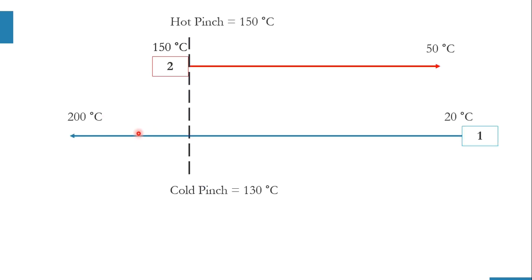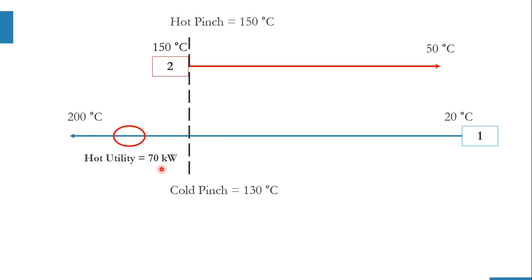Now we check the rules. Above pinch: number of hot streams is 0, number of cold streams is 1 — rule satisfied. CP of hot: no hot stream, so the CP rule is also satisfied. Since there is no hot stream above pinch, we simply provide a heating utility of 70 kW. Above pinch is solved.